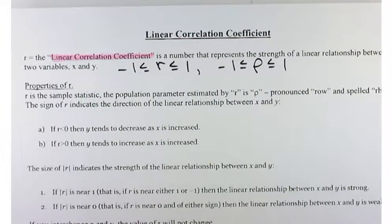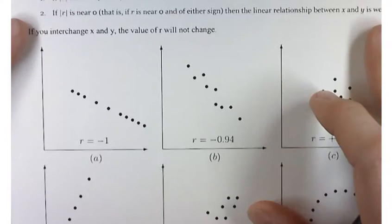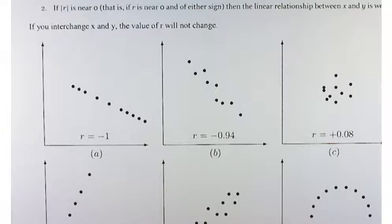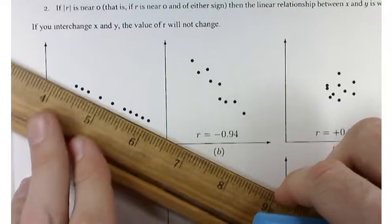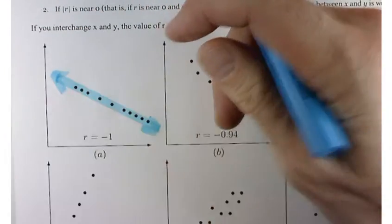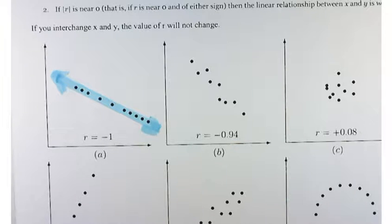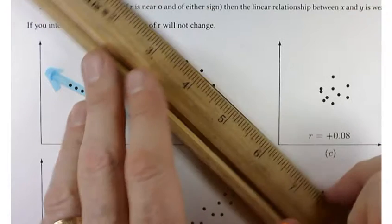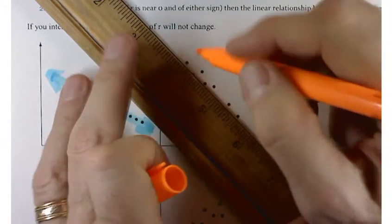R reflects the strength of a linear relationship between two variables. Let's go down to the bottom of our handout and look at some graphs. Starting with A, which is a perfect negative relationship — everything's on the same straight line. As you increase X, you decrease Y, so it has a negative slope, hence a negative value for R. That's a perfect linear relationship because everything is exactly on that line. If everything's not perfect but close to perfect, you'll get a value of R close to 1 or negative 1.